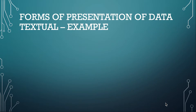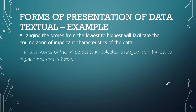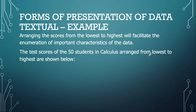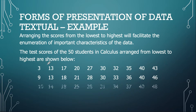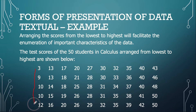Arranging the scores from lowest to highest will facilitate the enumeration of important characteristics of the data. The test scores of the 50 students, shown in the previous slide, are now arranged in ascending order — from lowest going to highest. The scores are taken from top to bottom: 3, 9, 10, 10, 12, 13, 13, 14, 15, 16, and so on. As you can see, they are now arranged in ascending order.